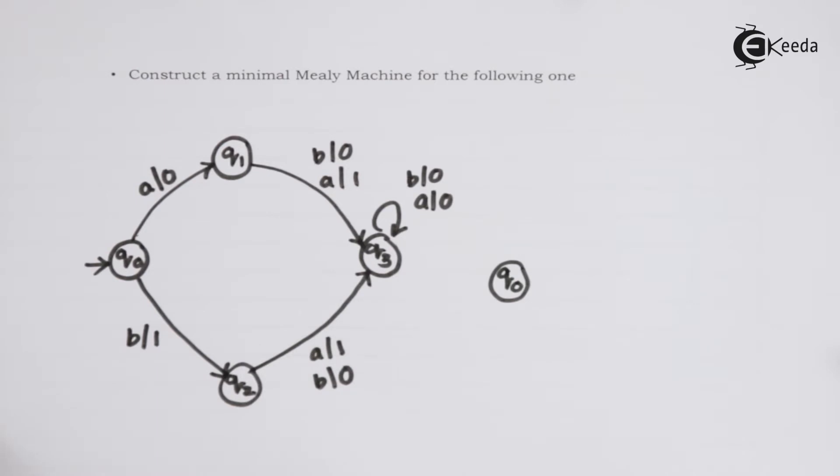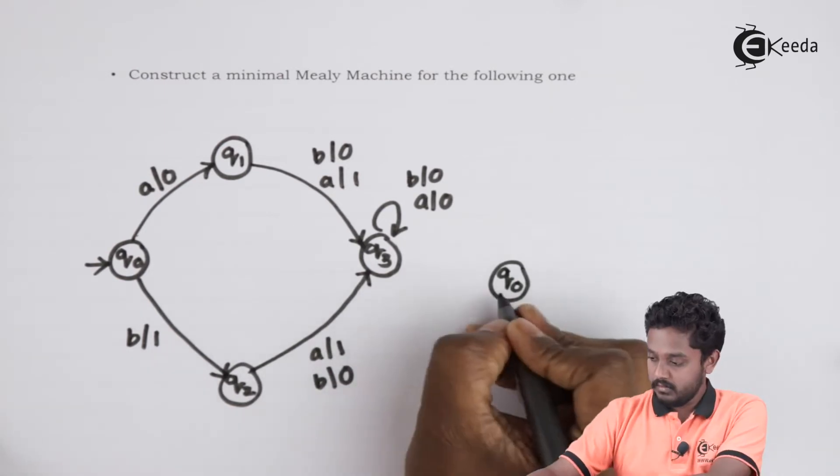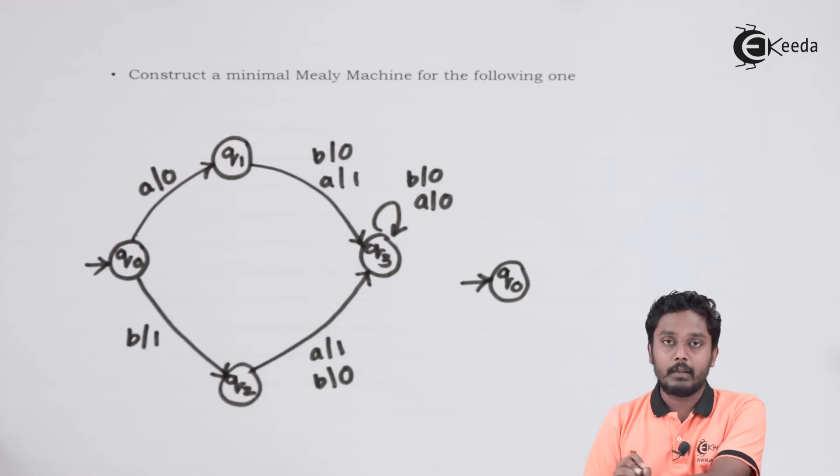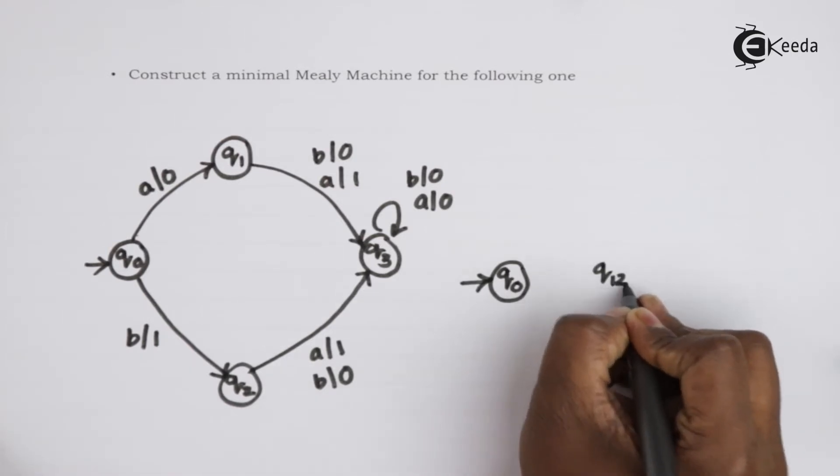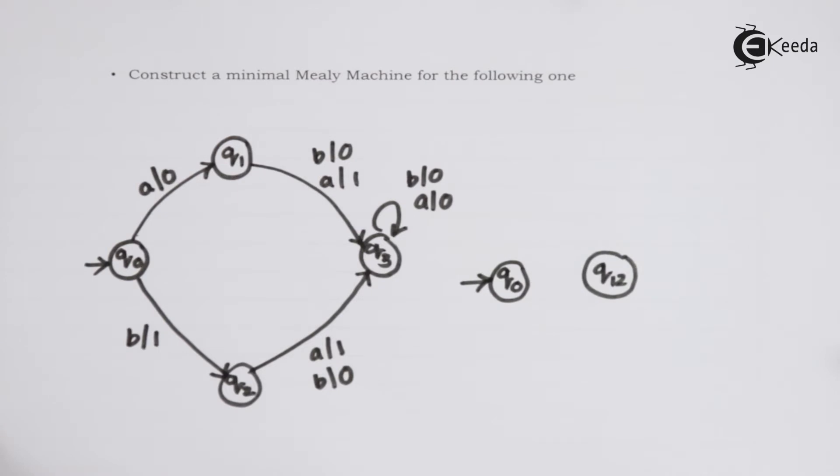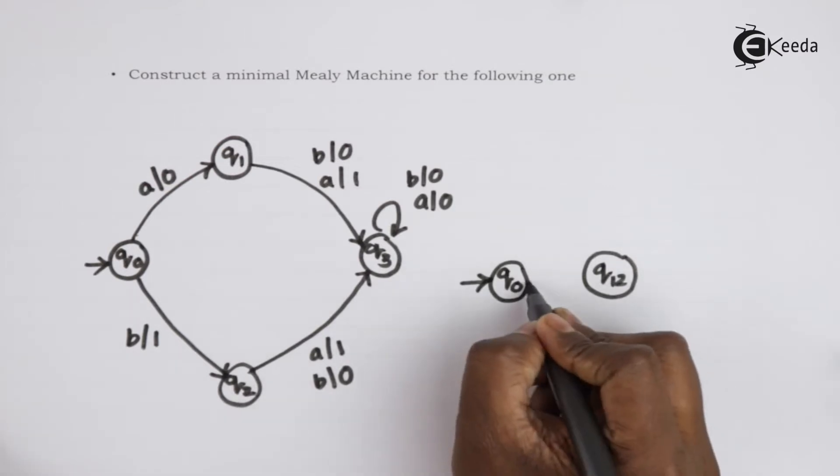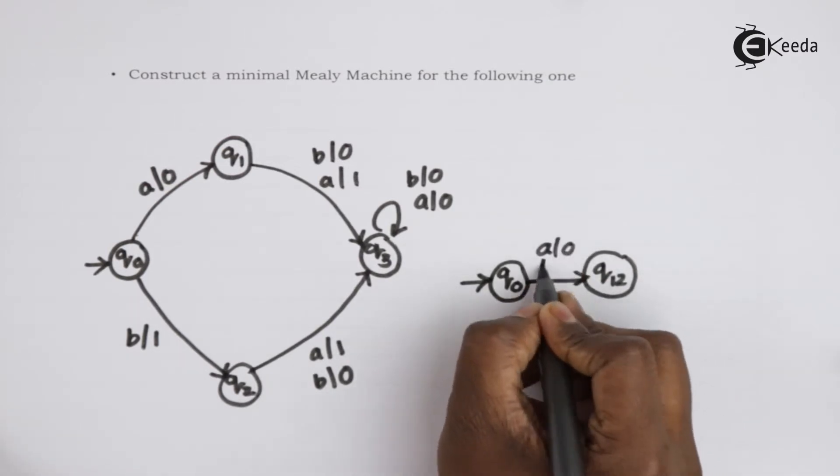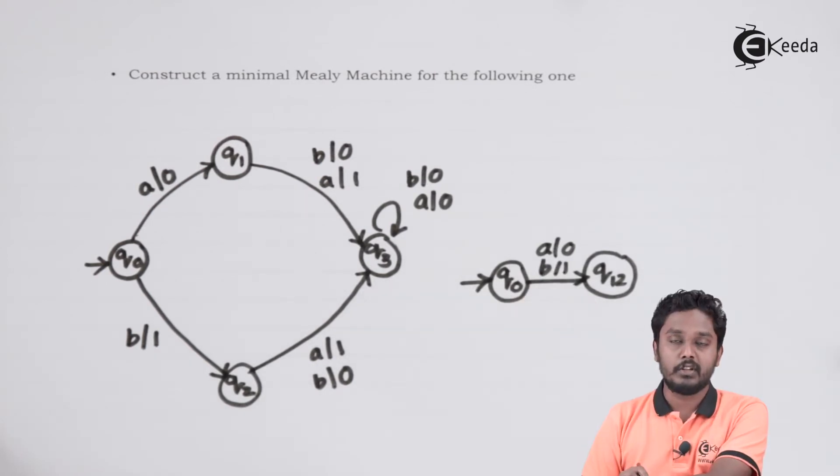I will need state Q0, I am preserving that. I am going to club state Q1 and Q2 into same state. Let's say that state is Q12. It will have a combination of both transition from Q0 to Q1 and Q0 to Q2. That was, with A we have output 0, with B we have output 1.